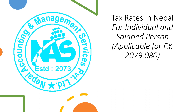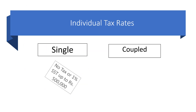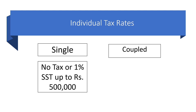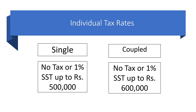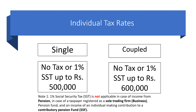Here we will discuss the tax rates applicable to individual or salaried persons. The first slab is one percent, applicable up to five lakh. If you are earning up to five lakh, you have to pay one percent — that is the social security tax. However, if you are a married person, you can claim the benefit of a coupled return, and the slab increases up to six lakh. Additionally, if you are registered with the Social Security Fund (SSF), you need not pay this one percent.